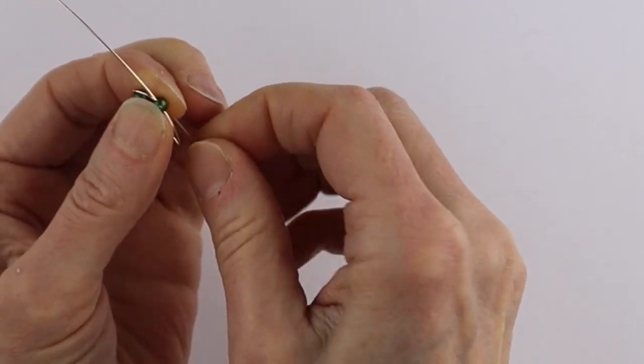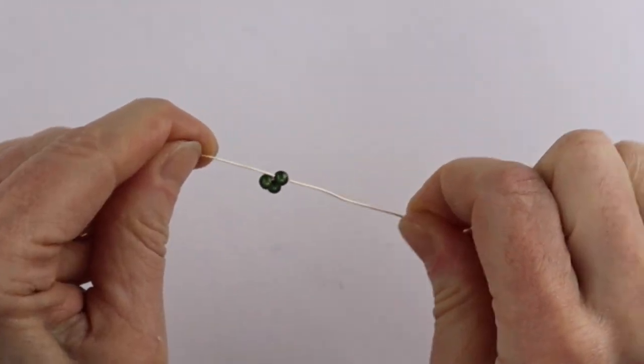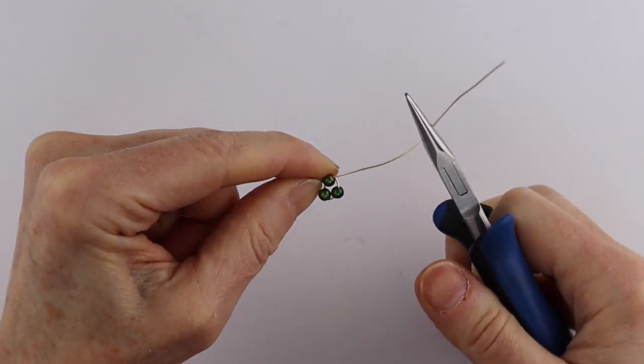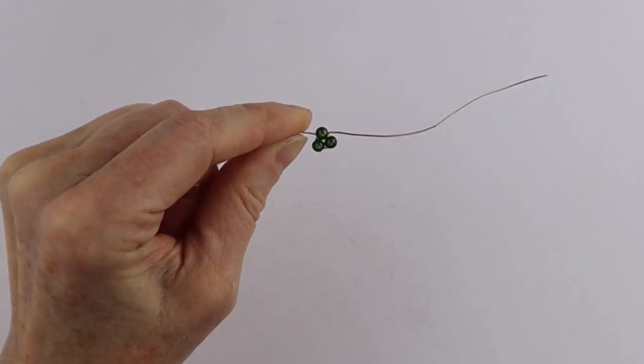Then what you're going to do is just tighten it up. If you need to, you can hold the end with the flat pliers and just really tighten it up.